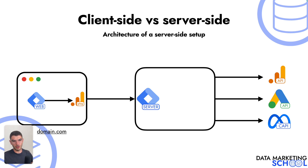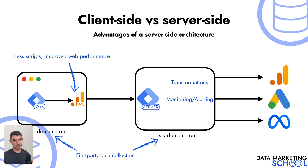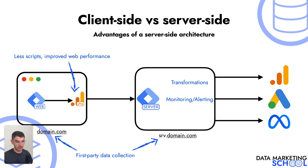On the client side, you need to load only Google Tag Manager and one script from GA4 in the most standard implementation. You send this data to your server, and then your server through GTM server-side dispatches the data to the different platforms. A server-side architecture comes with advantages: loading fewer scripts in the visitor's browser results in improved web performance. Since your server acts as a gateway, you can apply transformations on your data, enrich it, exclude some data from being sent to a specific platform, or edit data — for example, removing some bytes of the IP address — and apply it to one or all platforms.